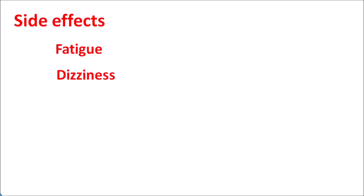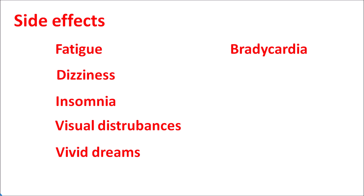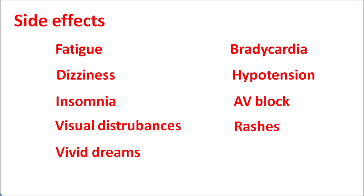What are the side effects? Propranolol can cross the blood-brain barrier, producing central side effects such as fatigue, dizziness, and lightheadedness. It can also produce insomnia, visual disturbances, vivid dreams, and illogical dreams. This drug can reduce heart rate, resulting in bradycardia, and reduce blood pressure, resulting in hypotension. At high doses it can also cause atrioventricular block, so it should be used carefully in patients with any conduction blocks. Finally, this drug can also produce hypersensitivity reactions resulting in skin rashes and erythema.